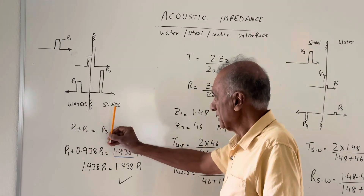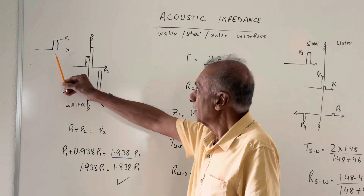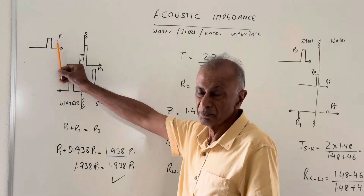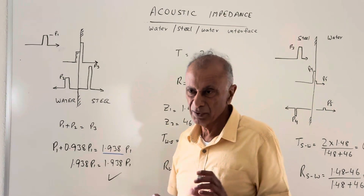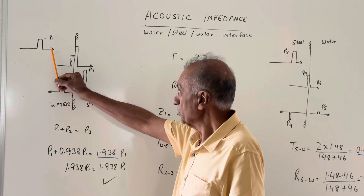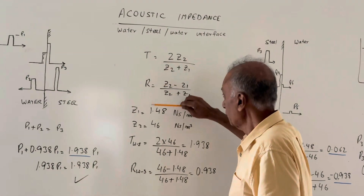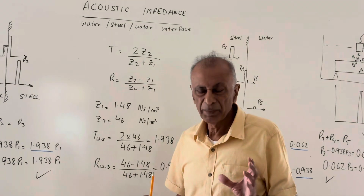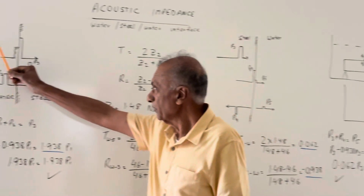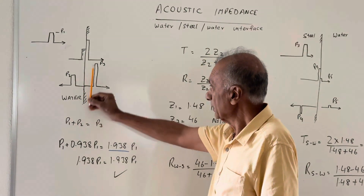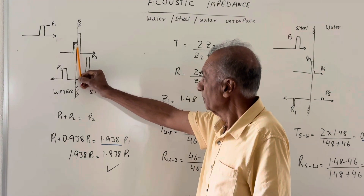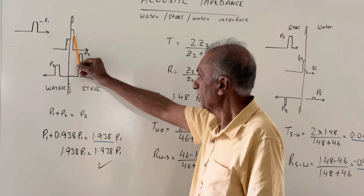Here we have water and steel, and here is a pulse coming — an acoustic pulse P1 which has a pressure P. We are going to be talking about the pressure of the pulse, and then we will use these formulas to calculate how much pressure is transmitted and how much is reflected. When this pulse P1 comes at this boundary of water and steel, P2 is the reflected pulse and P3 is the transmitted pulse.